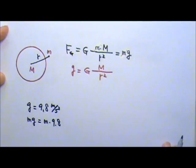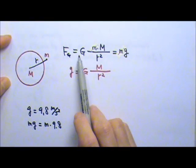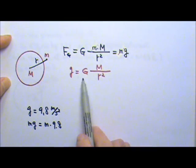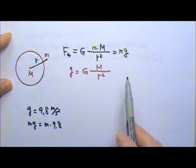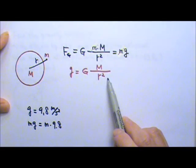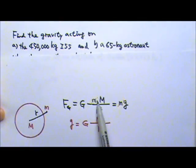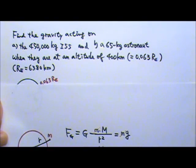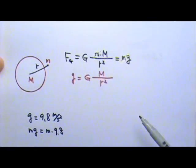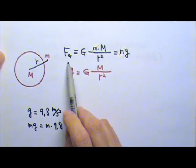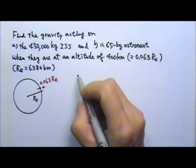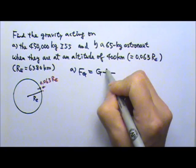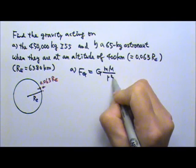To find the gravitational force, we can use F = GMm/r², or we can find little g first and then use mg. Either one is fine. But if we use the equation directly, we would need the mass of the Earth, which is not given in this problem. So we'll have to use proportion. I'm going to use the gravitational force F = GMm/r².